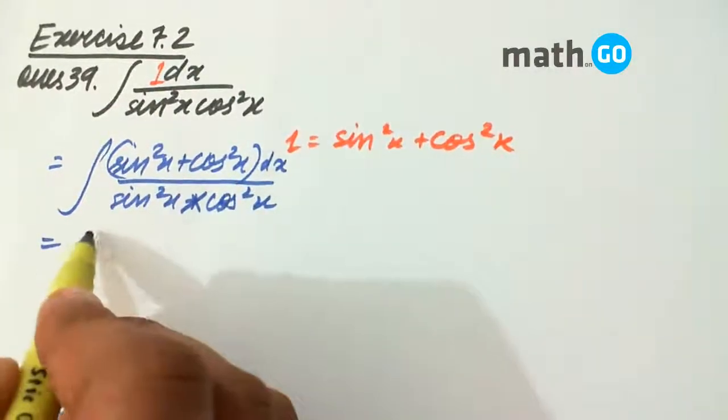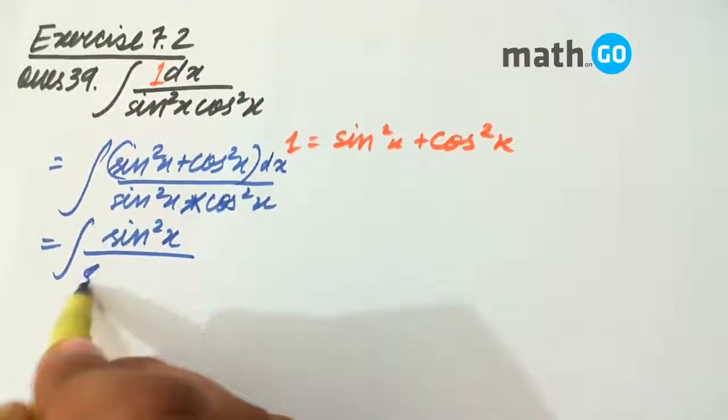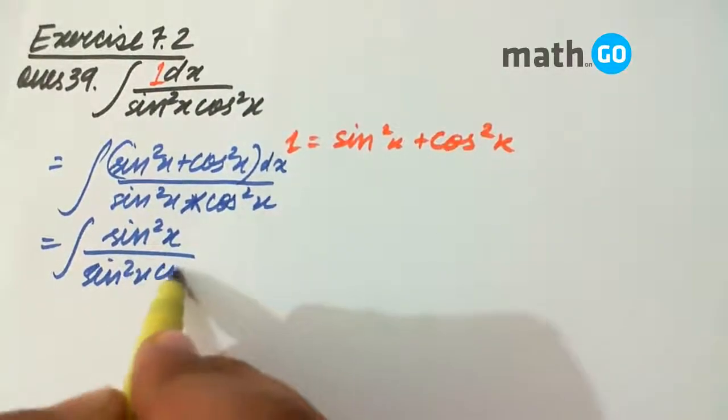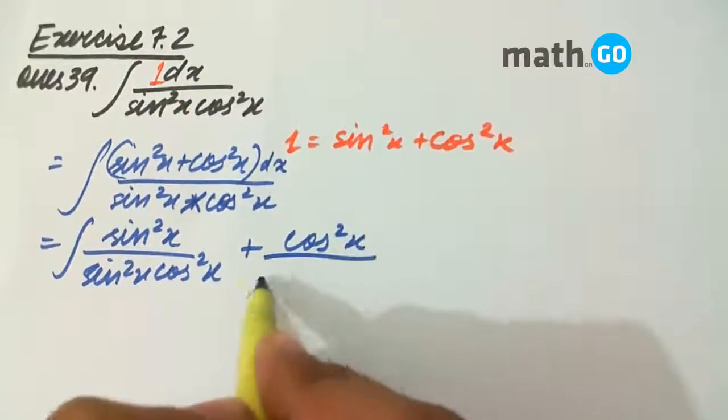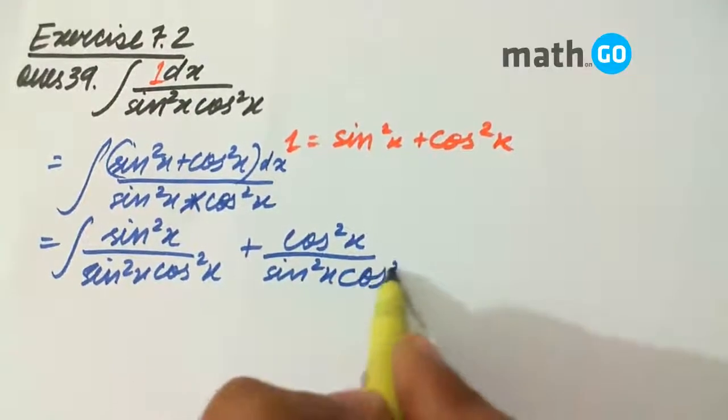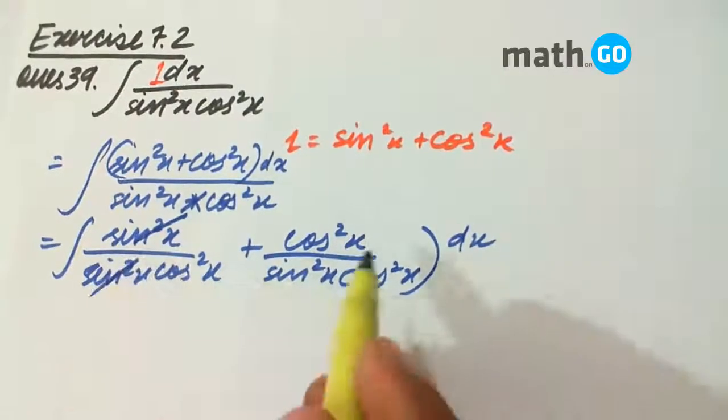If we divide it, we get sin squared x upon sin squared x into cos squared x plus cos squared x upon this expression. This cancels and coming in the numerator it becomes sec squared x.